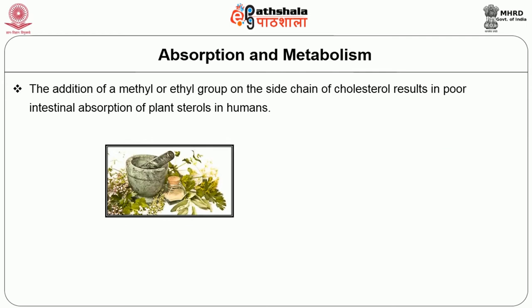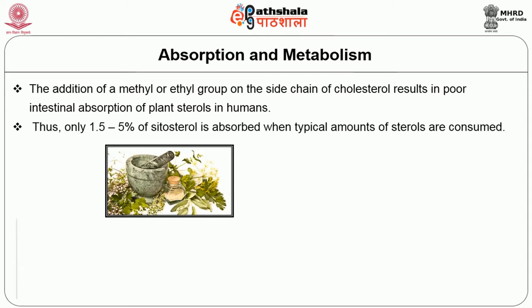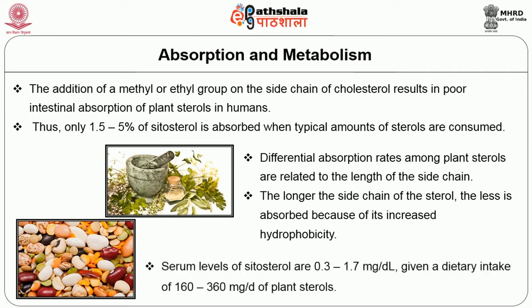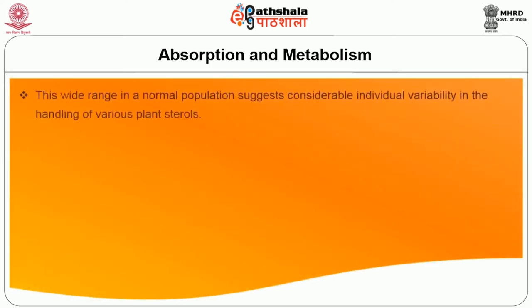The addition of a methyl or ethyl group on the side chain of cholesterol results in poor intestinal absorption of plant sterols in humans. Thus, only 1.5 to 5 percent of sitosterol is absorbed when typical amounts (approximately 240 to 320 milligrams) are consumed. Differential absorption rates among plant sterols are related to the length of the side chain — the longer the side chain, the less is absorbed due to increased hydrophobicity. Serum levels of sitosterol are 0.3 to 1.7 mg/dL given a dietary intake of 160 to 360 milligrams per day. This wide range in normal populations suggests considerable individual variability.